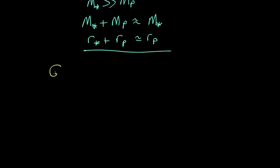G m planet m star over r planet squared, because it's actually r star plus r planet but we're using this approximation up here, is pretty equal to the centripetal force on the planet which is m p v p squared over r p.